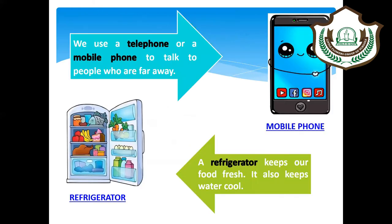Second is the mobile phone. We use a telephone or mobile phone to talk to people who are far away. Third is the refrigerator. A refrigerator keeps our food fresh and also keeps water cool.